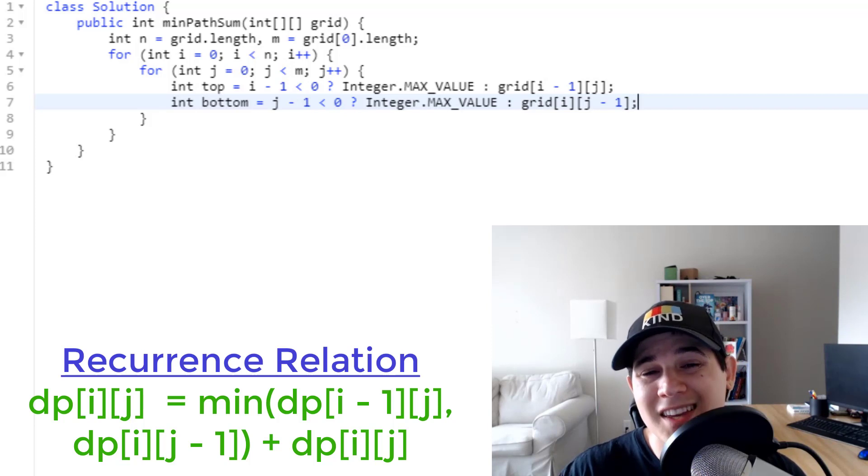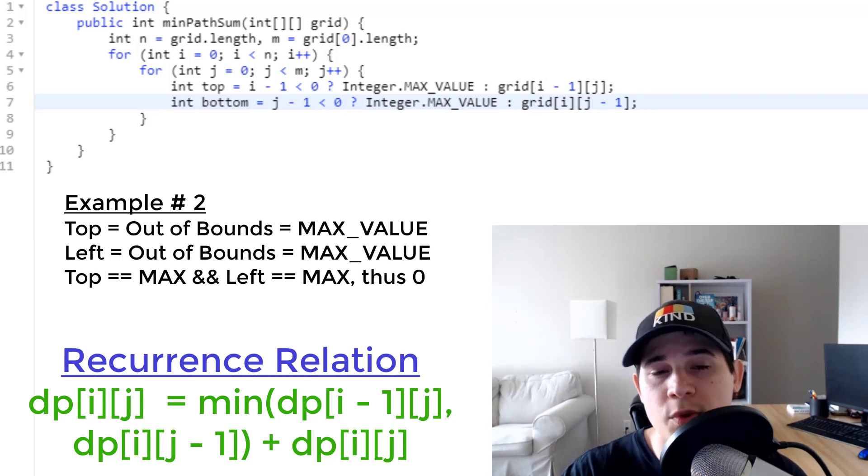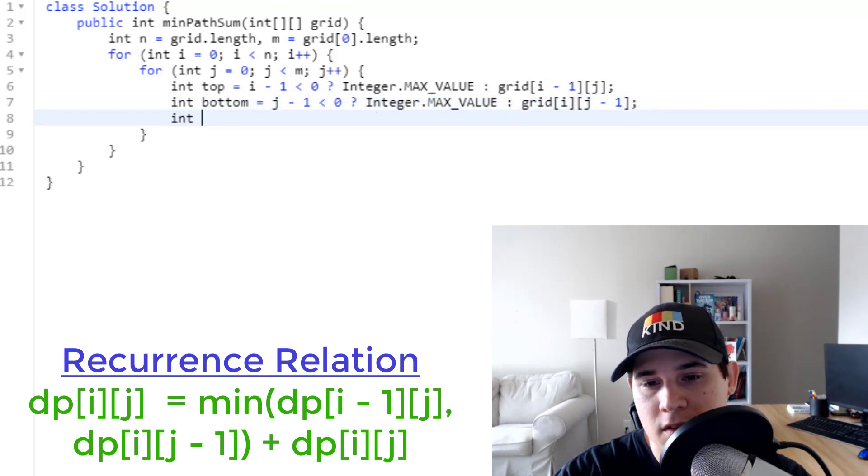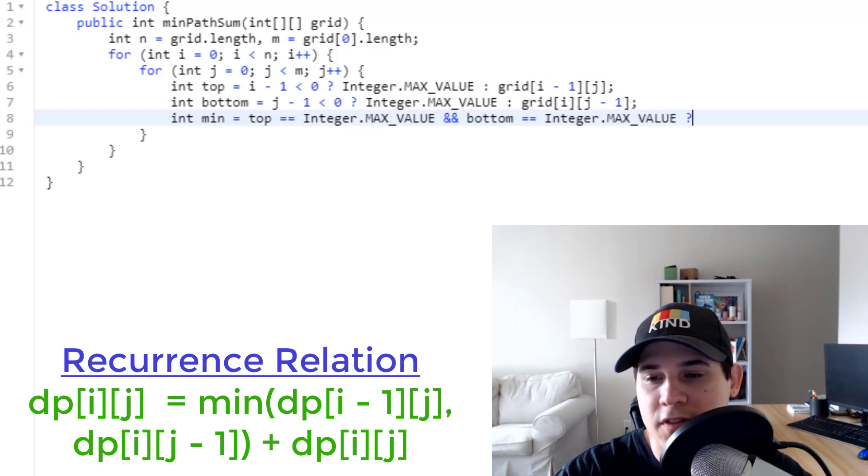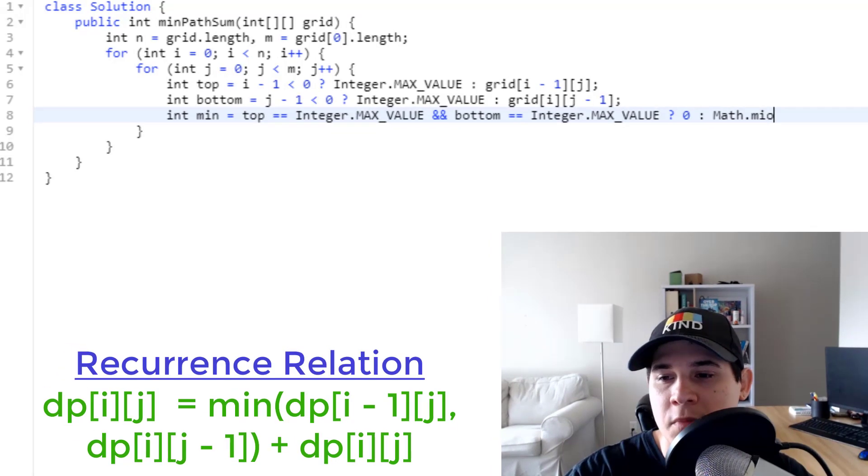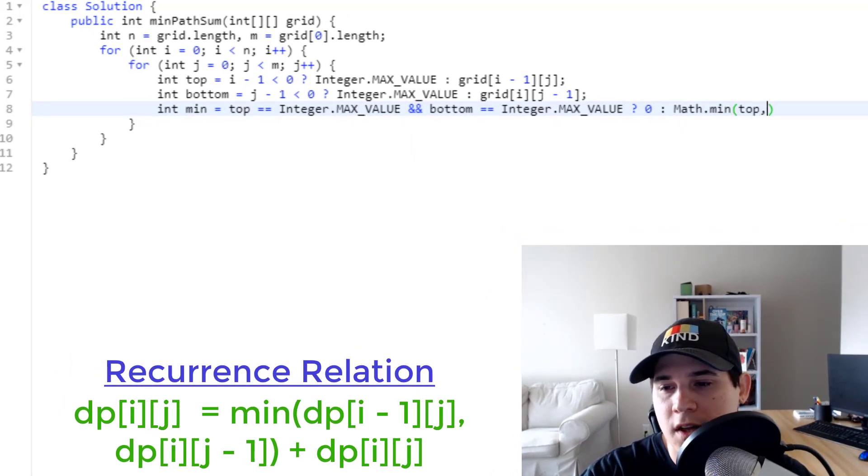So I'm sure you might be wondering what would happen if both our top and bottom are out of bounds, which is at position 0. If we look above us and to the left of us, both of those are out of bound positions. So that would mean we would be getting the minimum between top and bottom, which would still be Integer.MAX_VALUE, which is incorrect. So we need to have an extra edge case to check if both top and bottom are equal to the max values. And if they are, then default it to 0. So to do that, we can say int min will be equal to if top is equal to Integer.MAX_VALUE and our bottom is equal to Integer.MAX_VALUE. If that is true, then we default it to 0. Otherwise, we're just going to get the minimum between the two. So minimum between top and bottom. And now we can apply the regular recurrence relation to solve this.